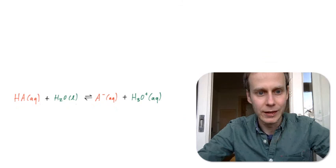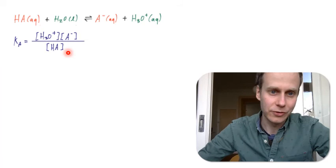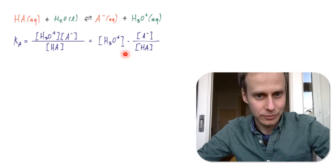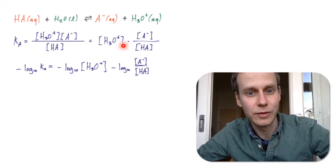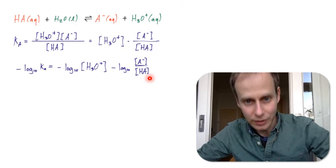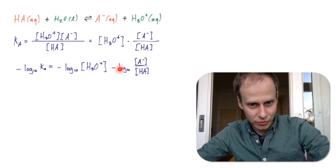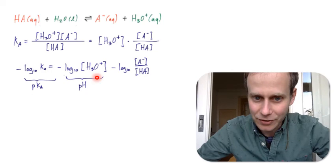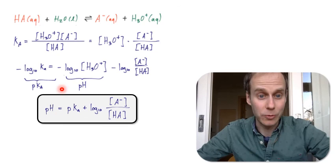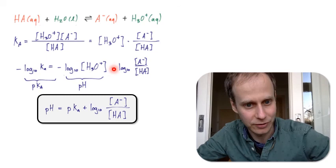Let's look at the equilibrium of the buffer mathematically. Starting from the Ka expression with products and reactants, I rearrange it. Taking the negative logarithm to the base 10 of Ka gives pKa, of H₃O⁺ gives pH, and of the ratio [A⁻]/[HA] gives a logarithmic term. Using the logarithm subtraction law, this leads to the Henderson-Hasselbalch equation.